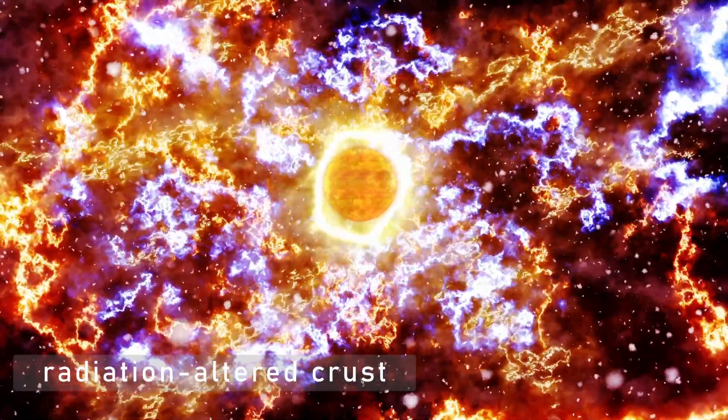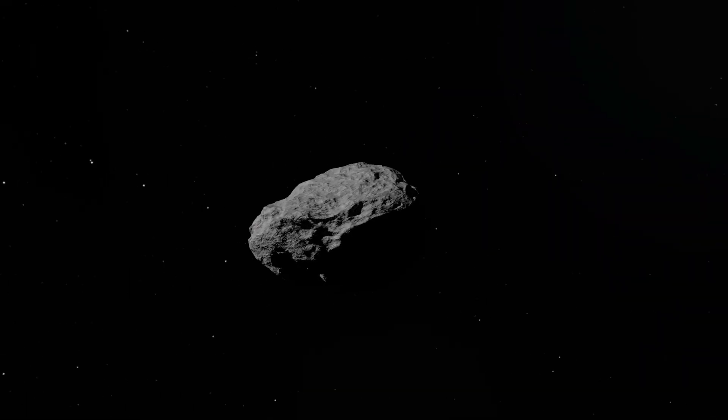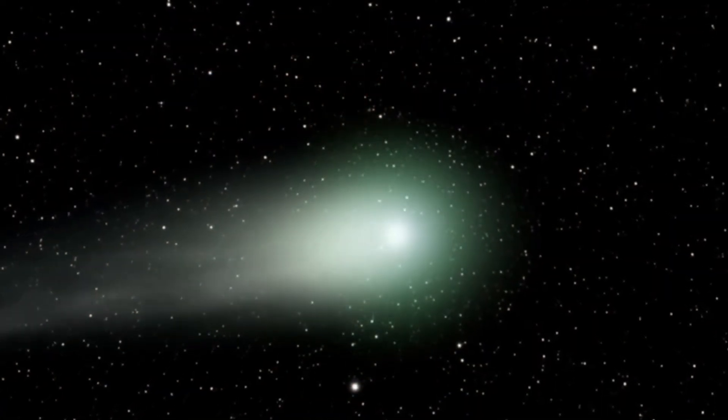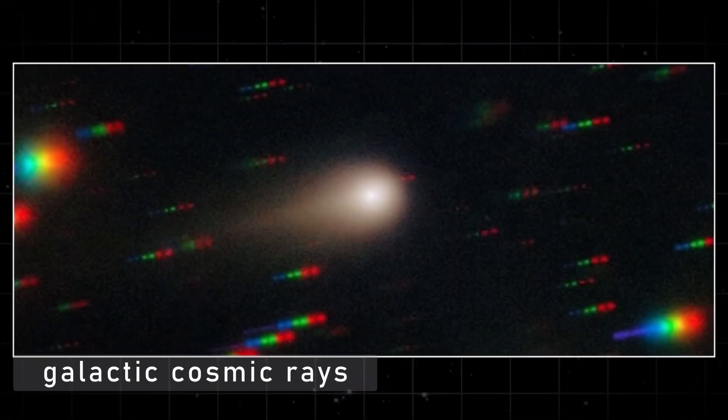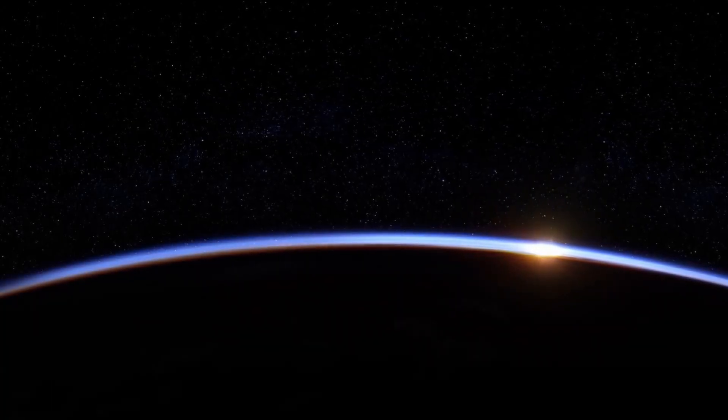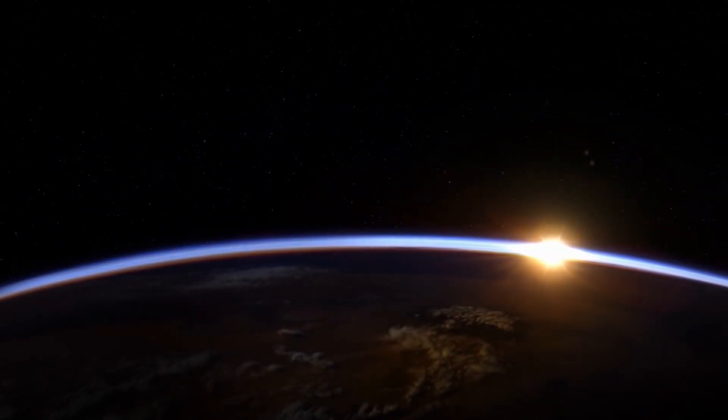A radiation-altered crust. After drifting through interstellar space for millions, maybe billions of years, 3i Atlas's surface had been bombarded by galactic cosmic rays. This wasn't just an icy body. It was an ancient archive, etched by time and starlight.